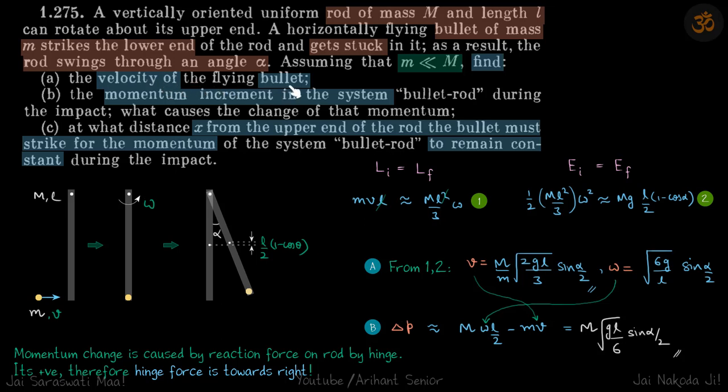We need to find what is the velocity of the flying bullet, what is the momentum increment of the system, and at what distance x from the upper end of the rod the bullet must strike for the momentum of the system to remain constant.